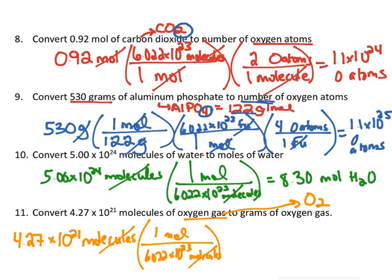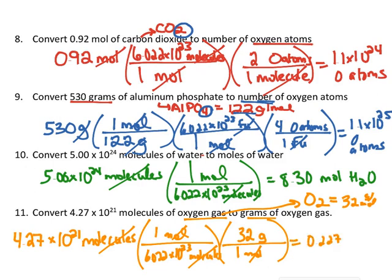Now I'm in moles. I don't want moles — I want grams. I can find the molar mass of O₂: there are two oxygens, each weighing 16 grams per mole, so altogether that's 32 grams per mole. I use that as a conversion factor, putting mole on the bottom so it cancels out and 32 grams on top. I end up with my answer of about 0.227 grams of oxygen gas.